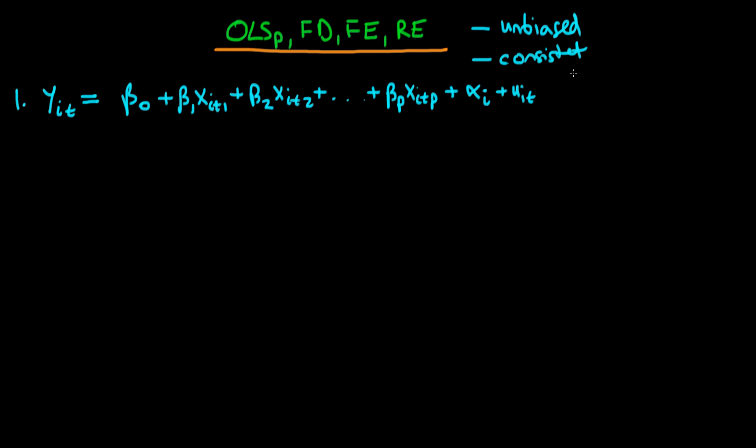And what we're going to be doing here is we're going to be looking at the conditions for OLS, first differences, fixed effects, and random effects and we're going to be looking at those conditions under which each of these estimators is either unbiased or consistent or both. And as it turns out each of these particular models require that we have a model which looks something like the one we've stated here.